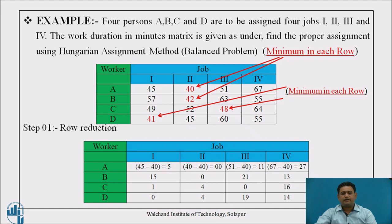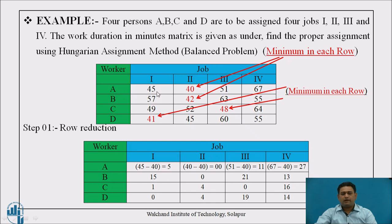Since it is already balanced, there is no need to convert it. This problem will be solved using the Hungarian assignment method. The first step of the Hungarian method is row reduction. In the original table, we select the smallest element in each row. For worker A — values 45, 40, 51, and 67 — the smallest is 40.